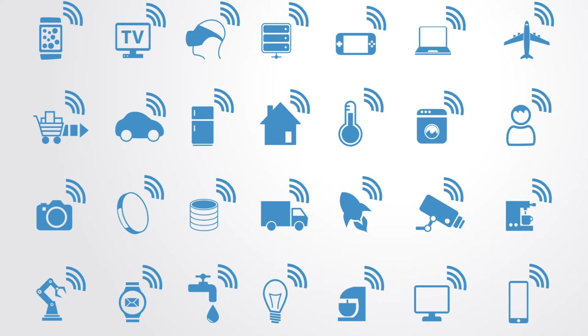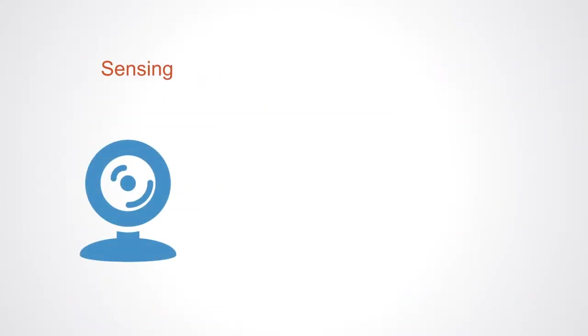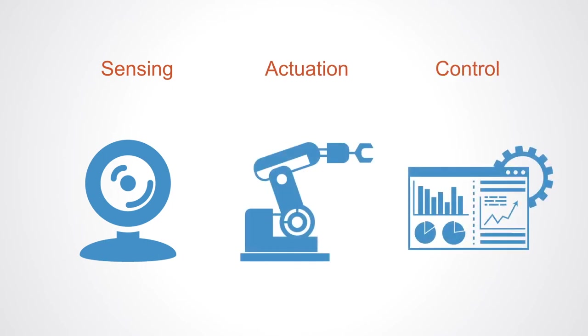These smart systems incorporate functions of sensing, actuation and control, in order to describe and analyze the situation, and make decisions based upon available data in a predictive or adaptive manner, thereby performing smart actions.